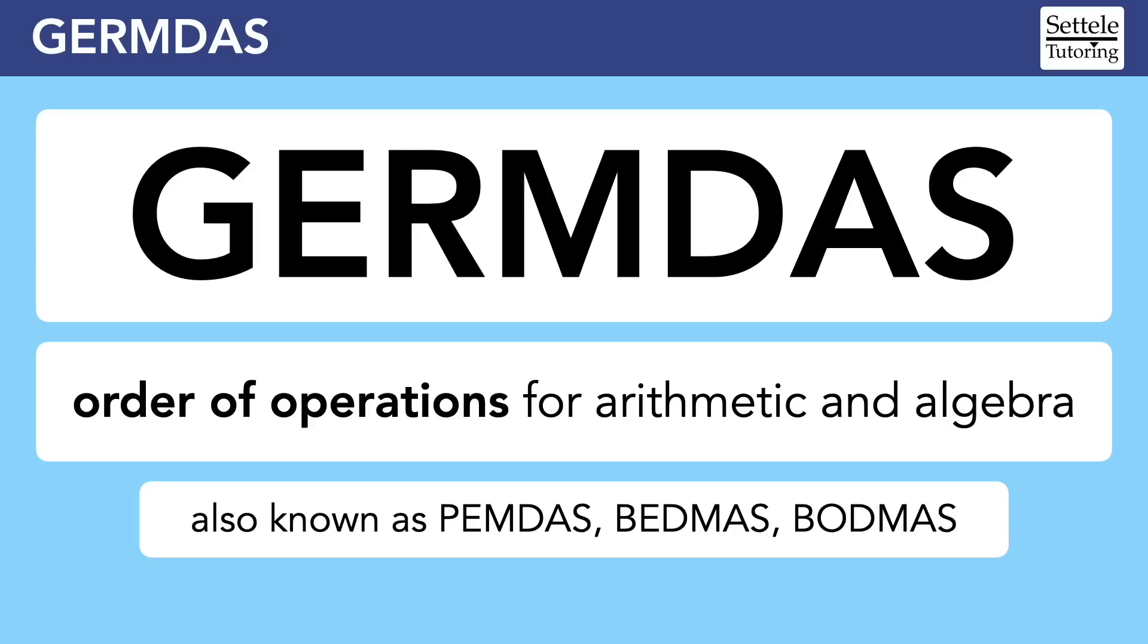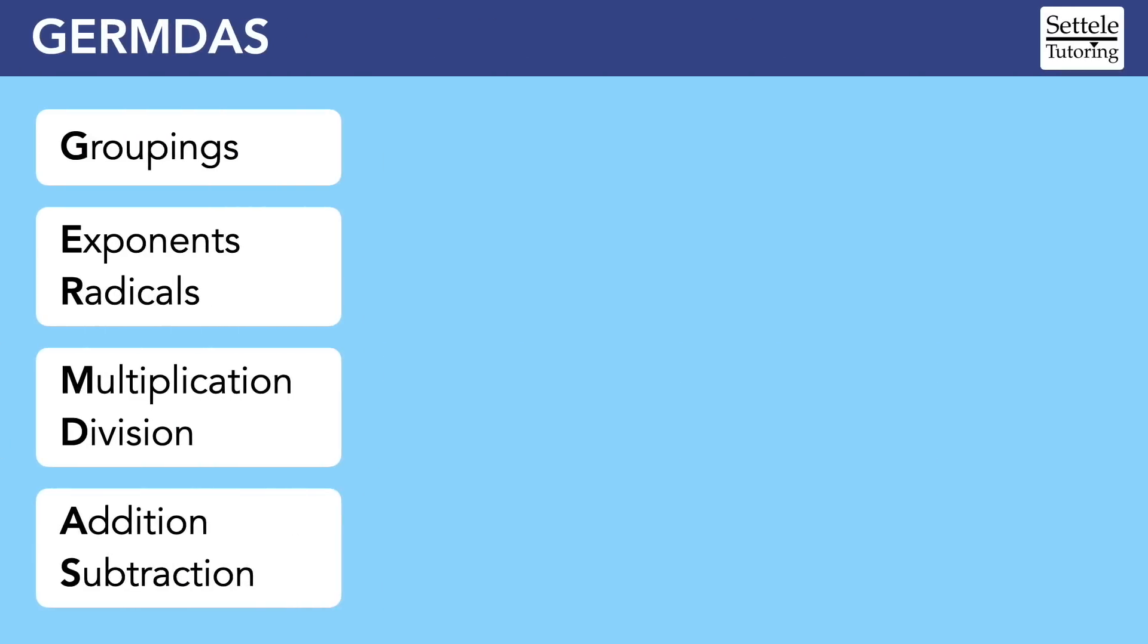Let's start by looking at what GERMDAS stands for. G is for groupings, E is for exponents, R is for radicals, M is multiplication, D is division, A is addition, and S is subtraction.